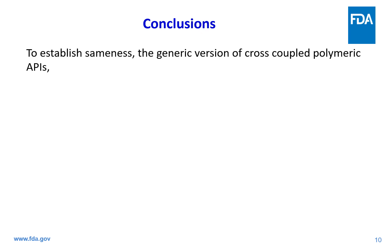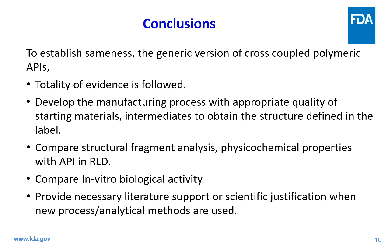In summary, to establish API sameness for cross-coupled polymers, a totality of evidence approach should be used. Development studies are needed to establish the quality of the basic polymeric chain, amount of cross-coupling reagent, amount of alkylating agents, and reaction conditions. The API should be compared with the API obtained from the RLD to propose that the API is highly similar to the RLD. Compare in vitro biological activity to support the proposed API's similar scavenging properties as the RLD. Provide necessary literature support where needed.